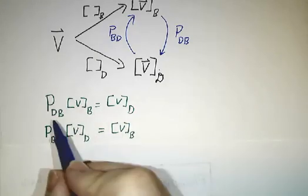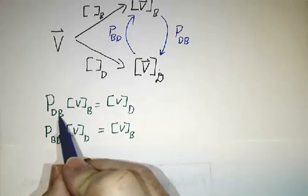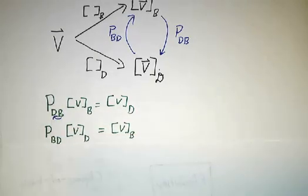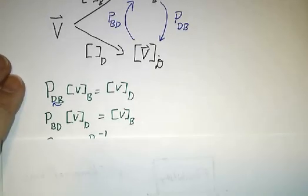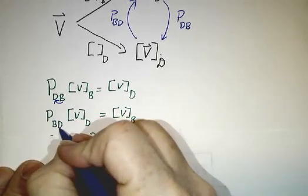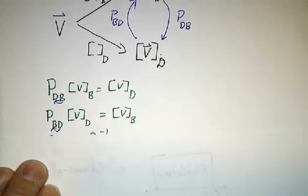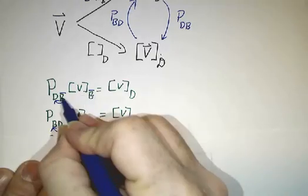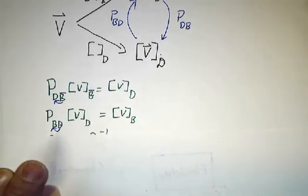Notice that you read right to left. P_DB converts from the B-basis to the D-basis. P_BD converts from the D-basis to the B-basis. Another way to notice it is that this B lines up here, this D lines up there.